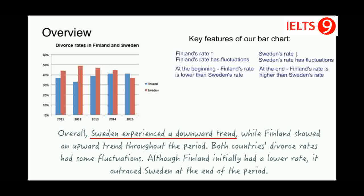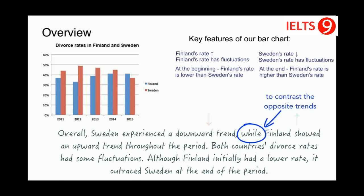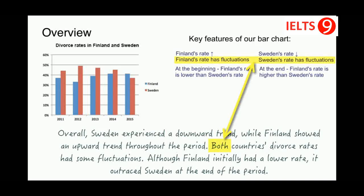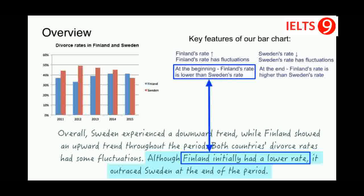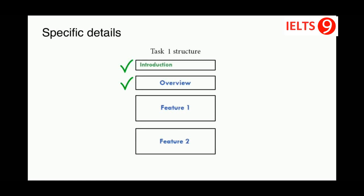I wrote 'Sweden experienced a downward trend' — a nice way of saying Sweden's rate went down — and 'Finland showed an upward trend', meaning Finland's rate went up. I used the linking word 'while' to contrast the opposite trends, which is a very good technique. I used 'both' to say the two countries shared the same feature — fluctuations. Finally, I used 'although' to compare the rates since Finland started lower but ended higher.